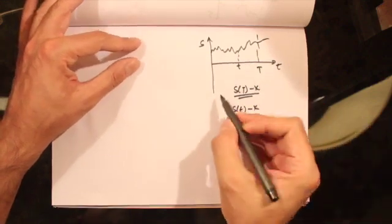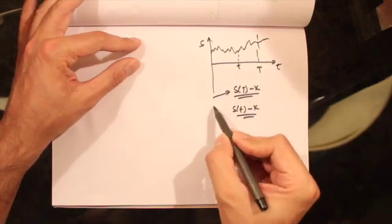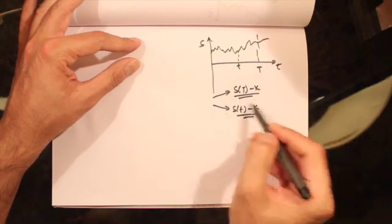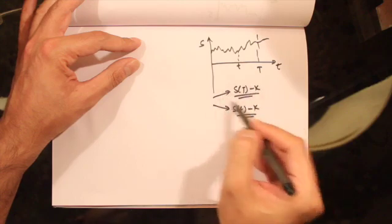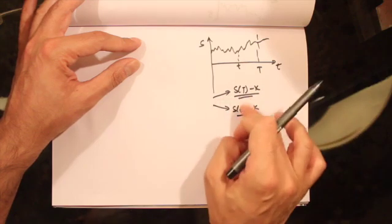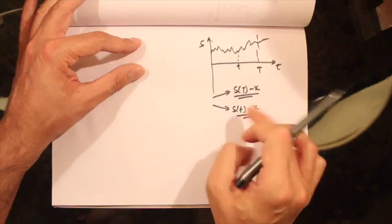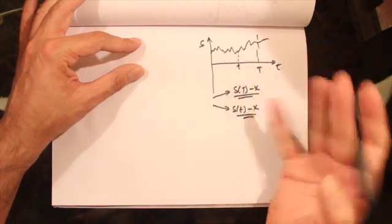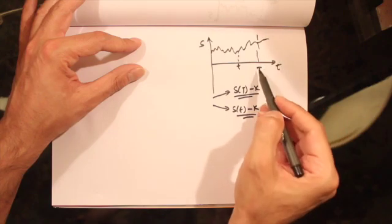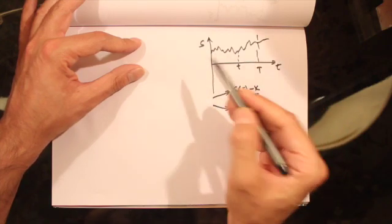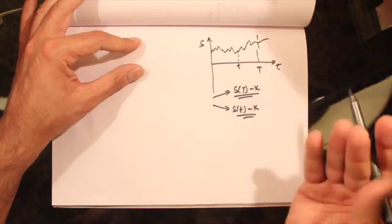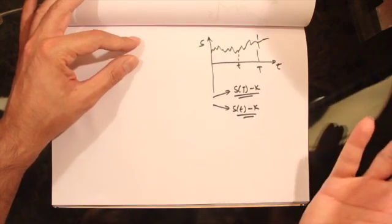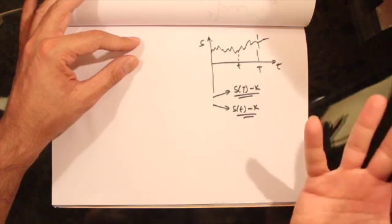Comparing a European option to an American option, the American option gives you all the features of a European option. The payoff at expiration is exactly the same, but whereas the European option can only be exercised at expiration, the American option can be exercised at expiration or at any point before. Because of this, American option prices are generally higher than European option prices due to this early exercise feature.